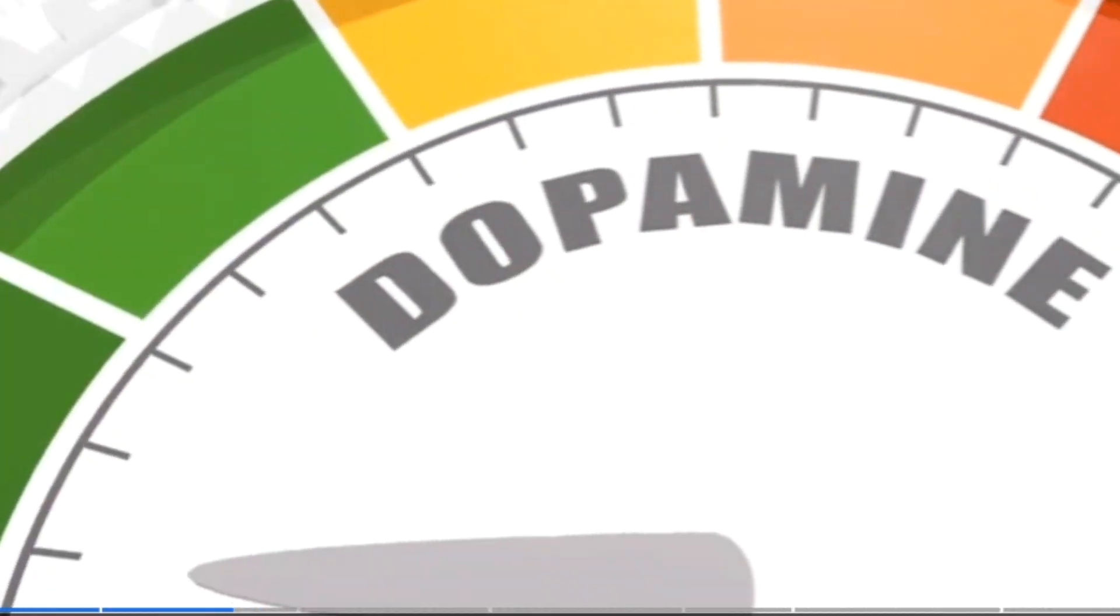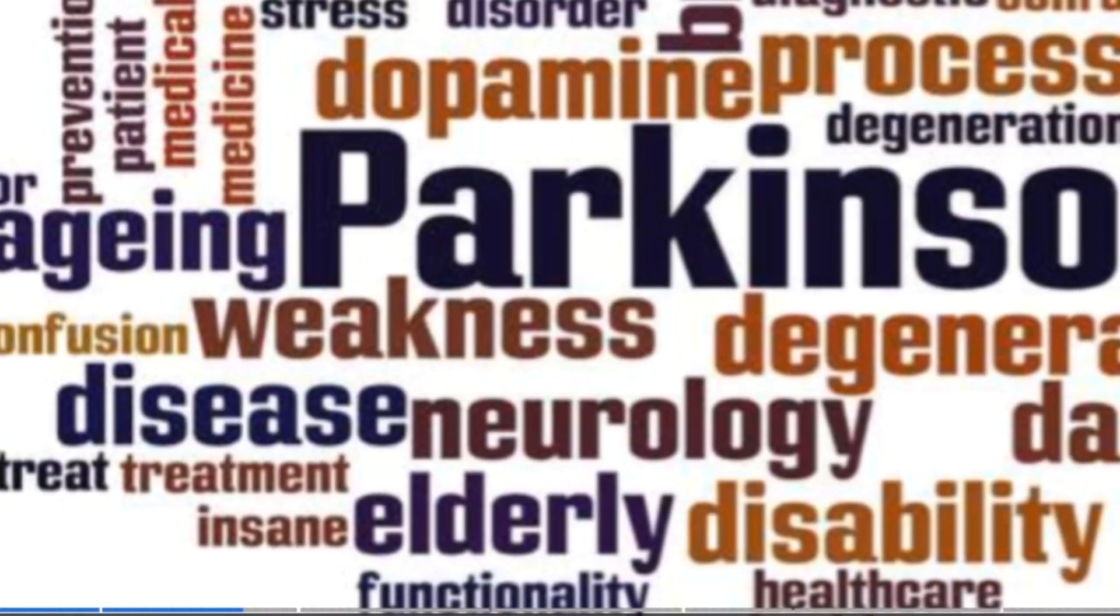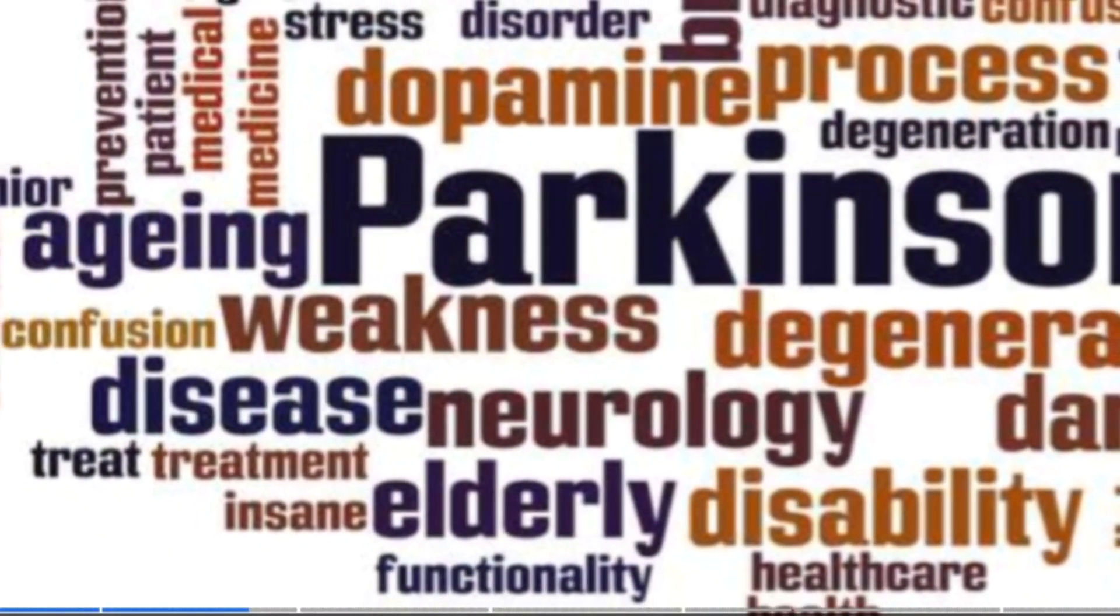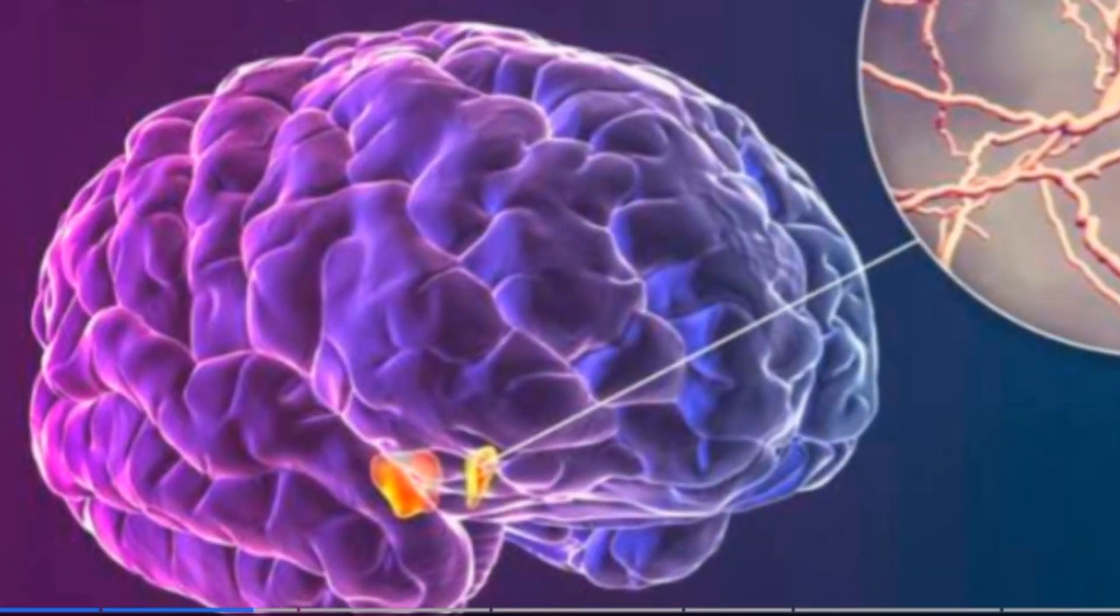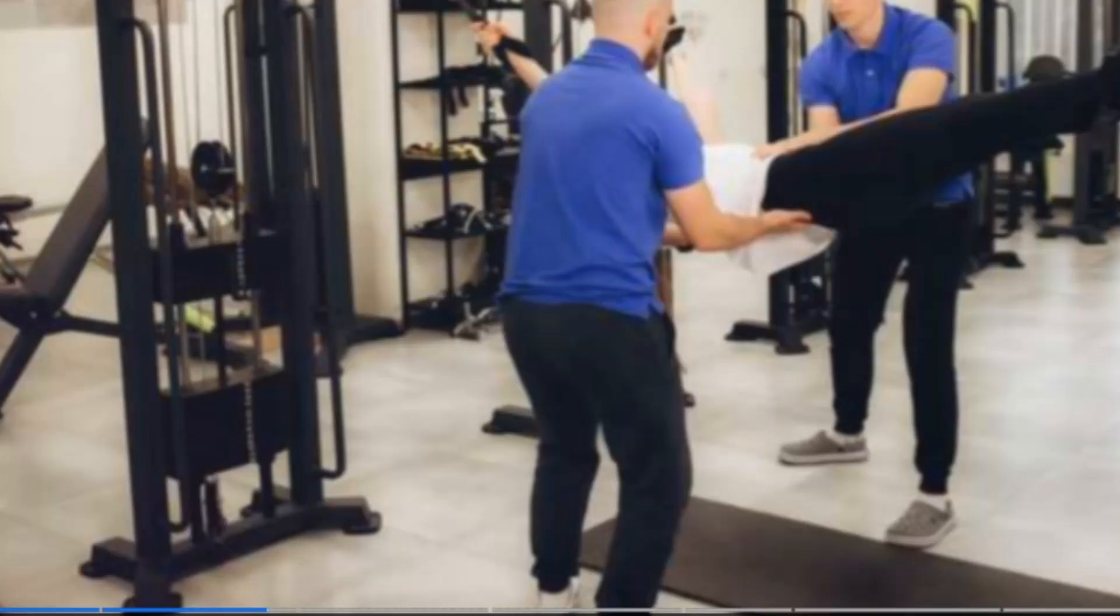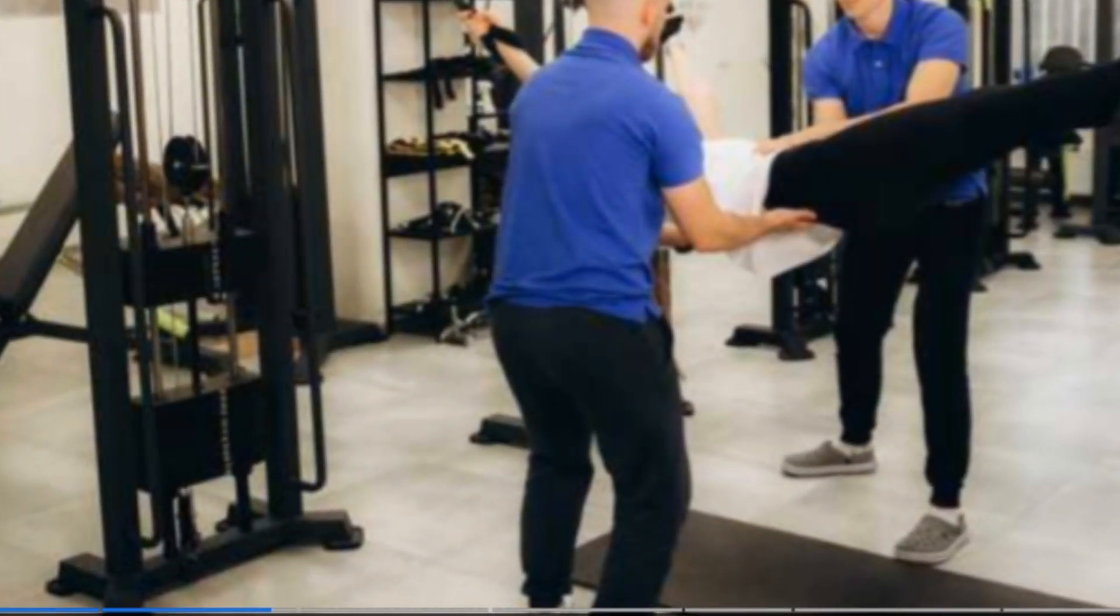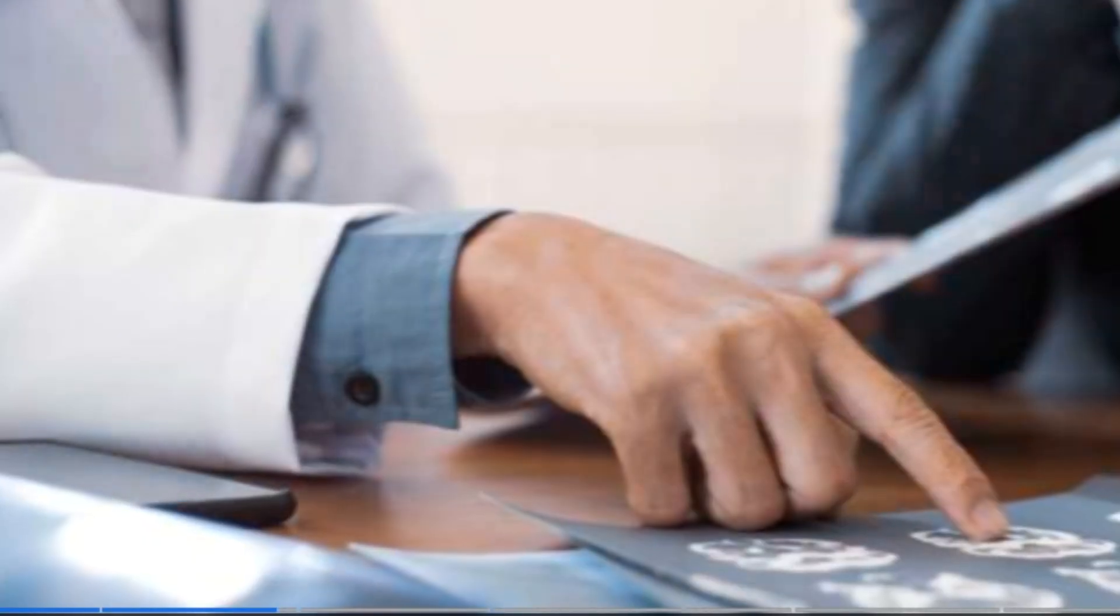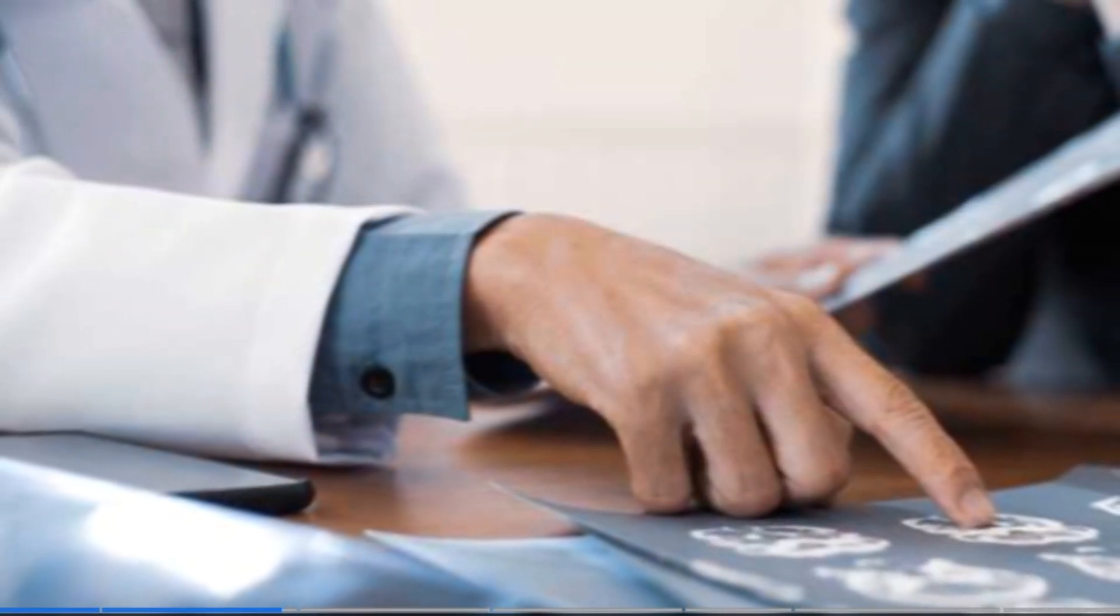Diseases related to dopamine dysfunction are numerous. Parkinson's disease is caused by the loss of dopamine-producing neurons in the substantia nigra. This leads to motor symptoms like tremors and stiffness. Schizophrenia, on the other hand, is associated with abnormal dopamine levels in different brain regions, affecting thought processes and perceptions.